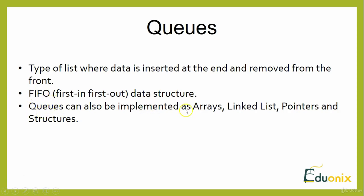Queues can be implemented like an array, a linked list, pointers, as well as structures. A good real-world example: think of a queue like the line at your bank, where the first person in line is the first person served. As more customers enter the line, they have to wait until their specific turn comes — you cannot skip based on your occurrence.